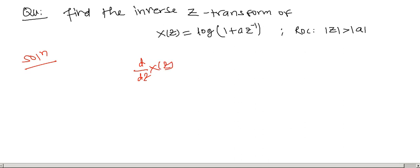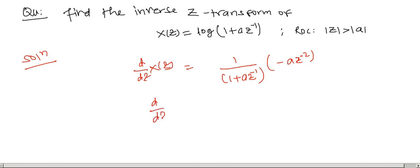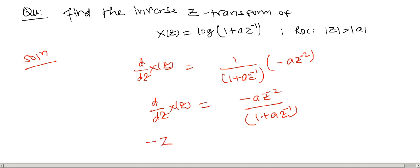Taking d/dz of X(z): the differentiation of log(x) is 1/x, so the differentiation of log(1 + az⁻¹) will be 1/(1 + az⁻¹). Further, differentiation of that term gives -az⁻². Now let us multiply both sides by -z, so we get: -z · d/dz of X(z) = az⁻¹ / (1 + az⁻¹).